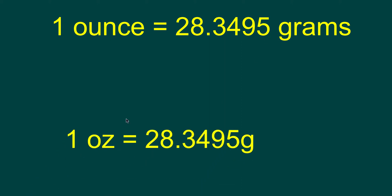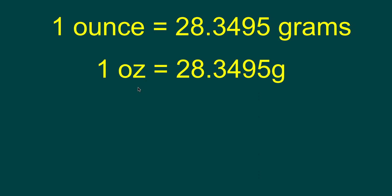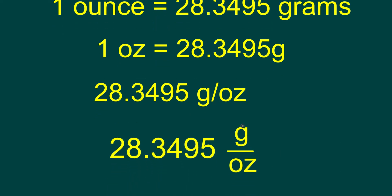With the symbols, we can write 1 oz equals 28.3495, and the symbol for grams is g. We can also say that there are 28.3495 grams per ounce, which can also be written in this form.